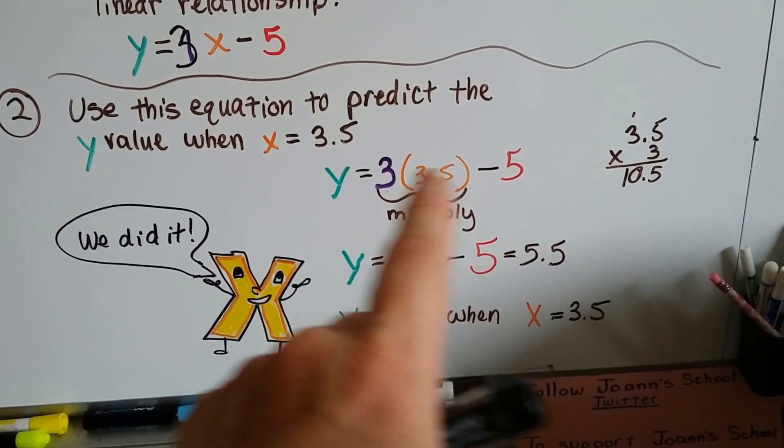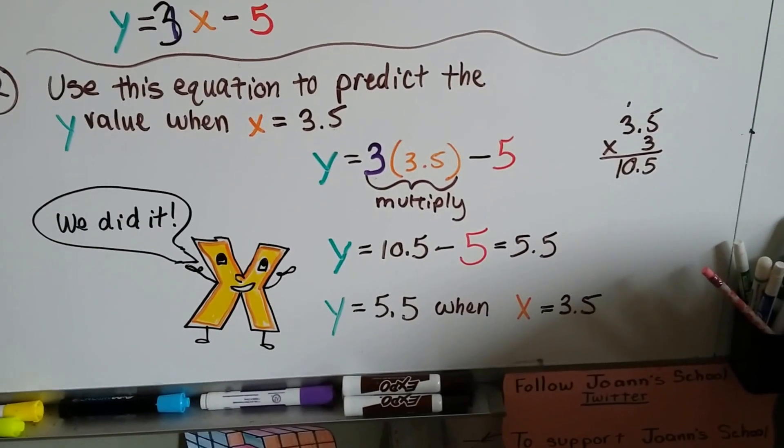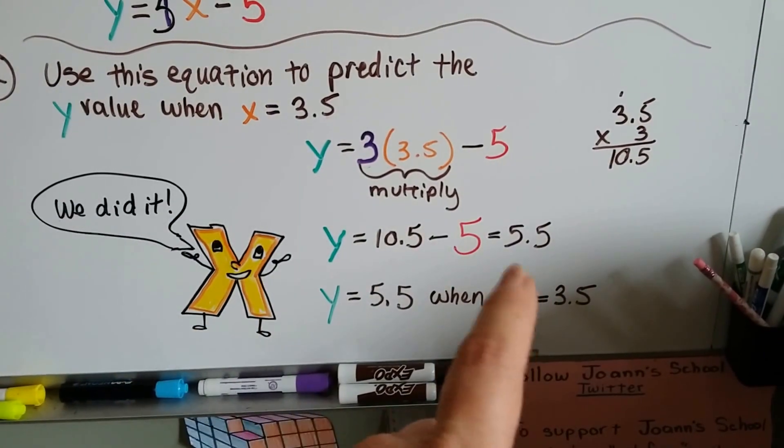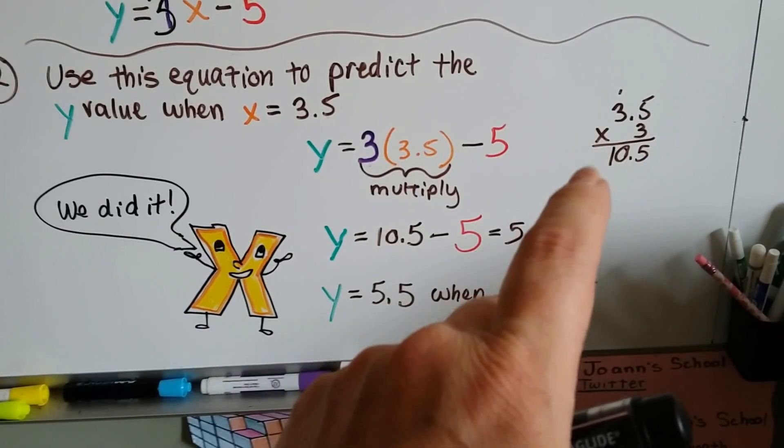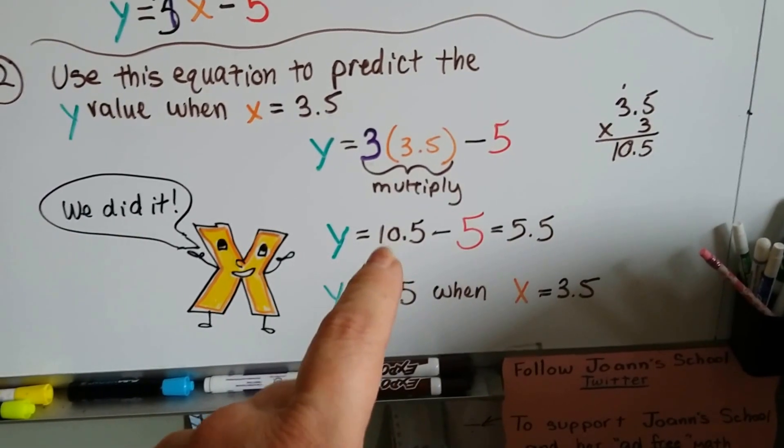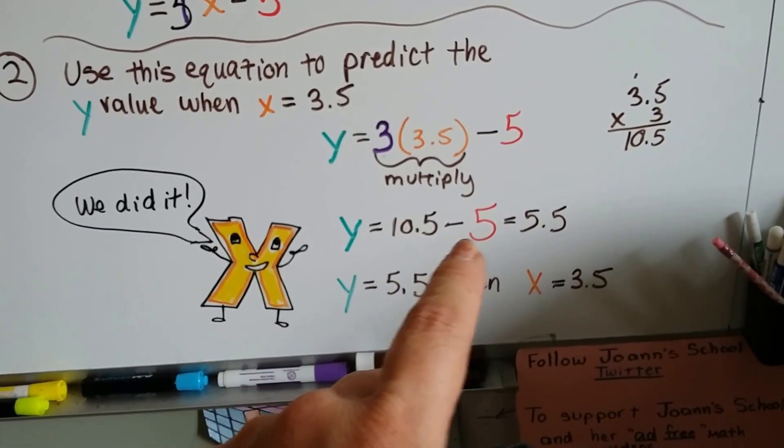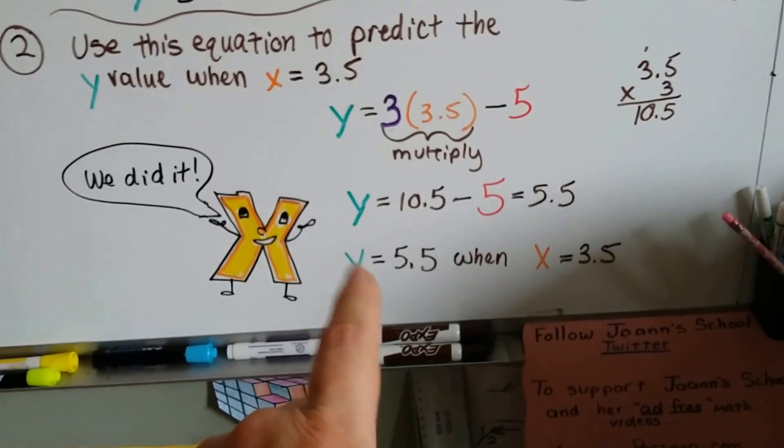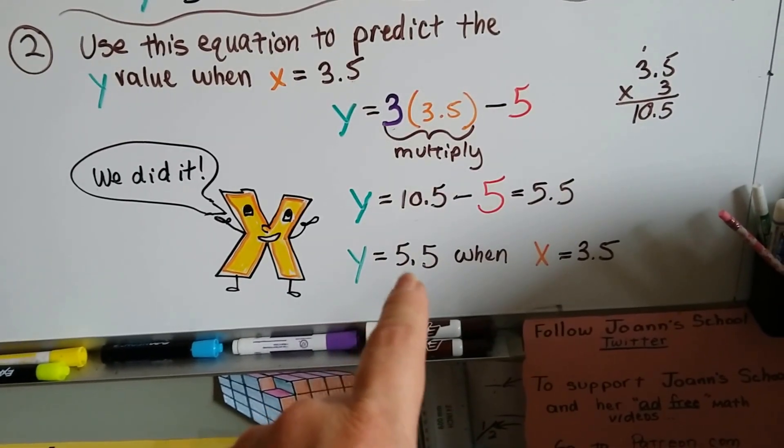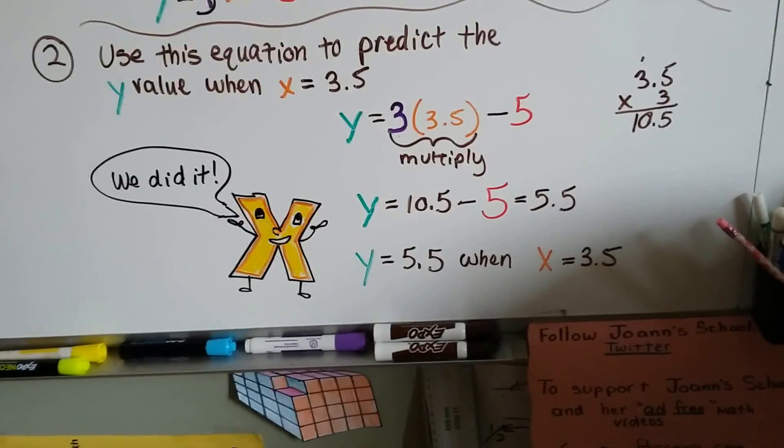Now what we have to do is solve these and we'll have our y. We'll have our y value when x equals 3.5. So 3.5 times 3 is 10.5. 10.5 minus that b, that minus 5, is 5.5. Now we know that y is going to be 5.5 when x equals 3.5.